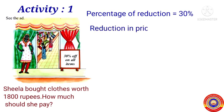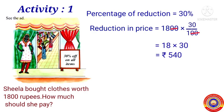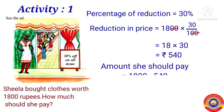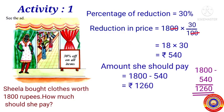The reduction is 30 percentage of 1800, that is equal to 1800 into 30 by 100. There are three zeros in the numerator and two zeros in the denominator. We cancel the same number of zeros from both. After cancelling, we got 18 into 30, that is equal to 540 rupees. Therefore reduction in price is 540 rupees. Sheila has to pay 1800 minus 540, that is equal to 1260 rupees.